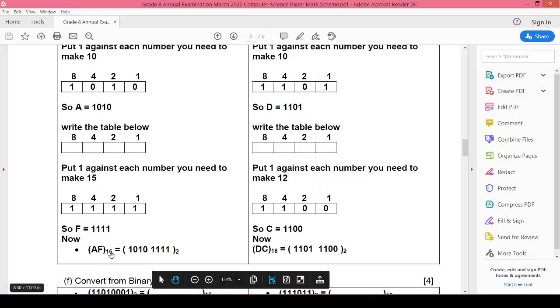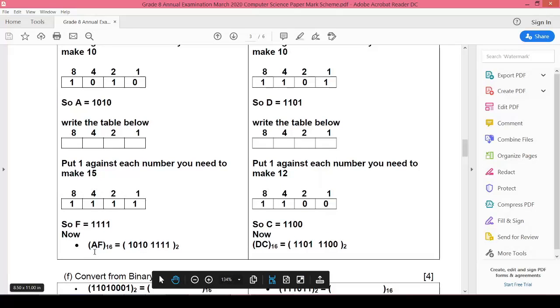So how we will write them, sir? We will write the code of A on the left side and the code of F on the right side, and collectively it will be equal to the binary equivalent of AF16.